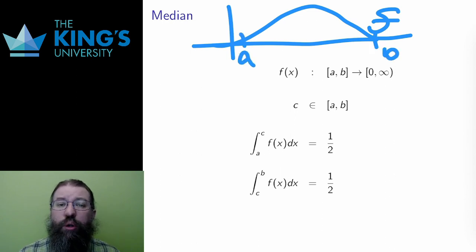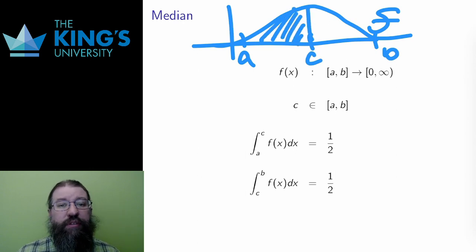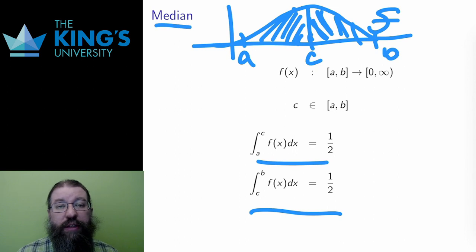such that the area to the left and the area to the right of c are both exactly 1 half. This number c is called the median. It's intuitively clear that this is some kind of central tendency. It's between exactly half of the probability area on either side.